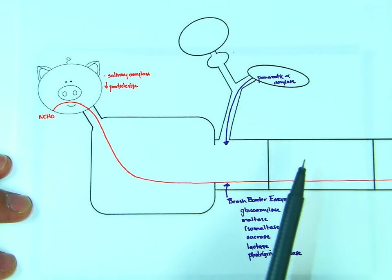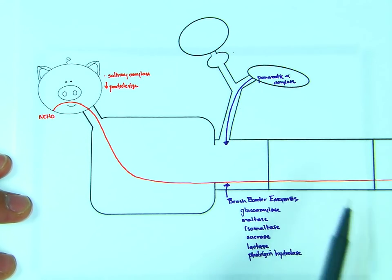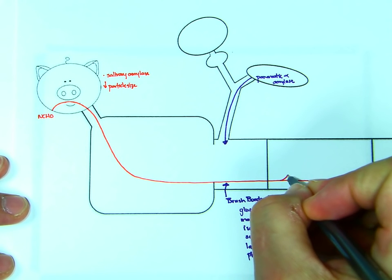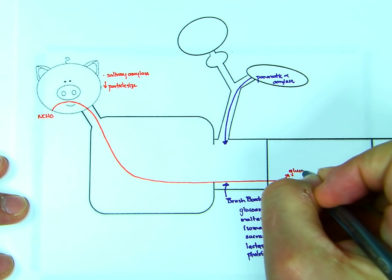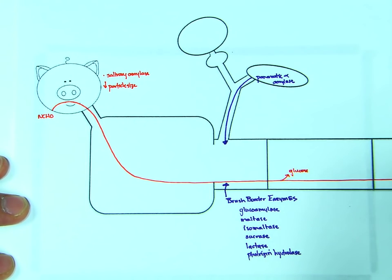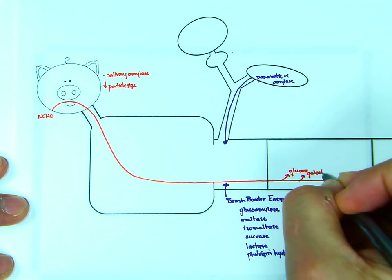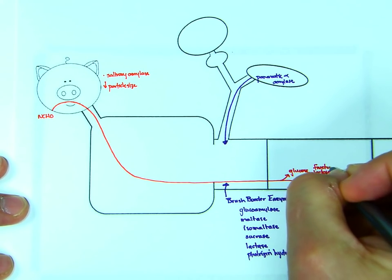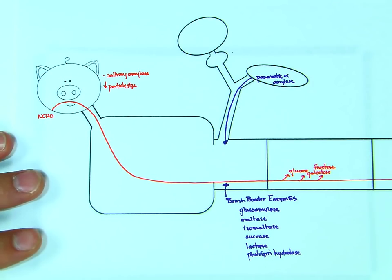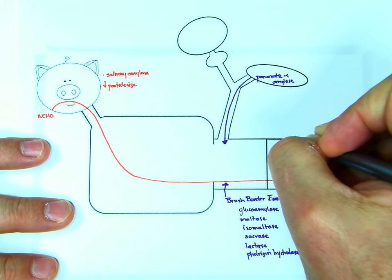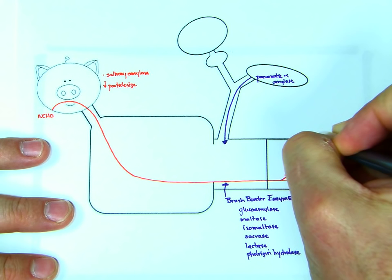And the activity of pancreatic alpha amylase and then the brush border enzymes is going to result in glucose and galactose and fructose all being available for absorption. We just made a video of the enterocyte. But as I would, if it was me and I was studying, I would make an enterocyte here as well,